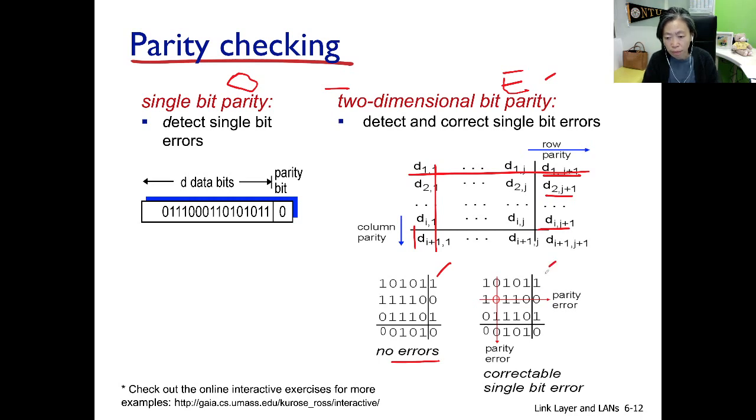In the example on the right, you see that the second row and second column, we detect error. And so we'll be able to pinpoint exactly where the error is, and therefore, we can correct this particular error as well.